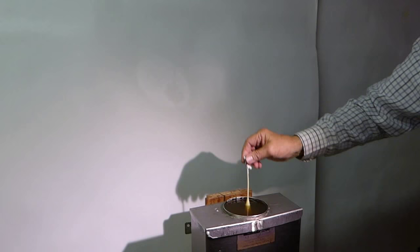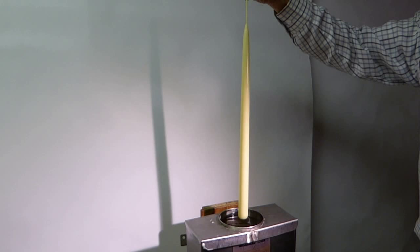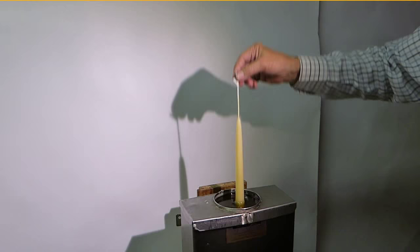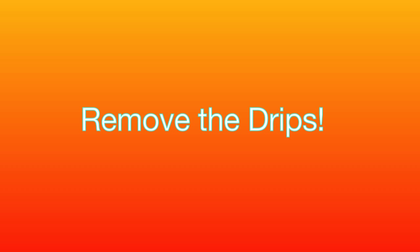Now you're ready to start your third round of dips. Remember to keep the wax topped up as the candle's getting bigger. Remember to keep the same rhythmical movement and remember to take the drip off the bottom of the candle after you've hung it up to make sure that the bottom of the candle stays flat.